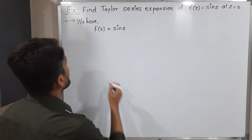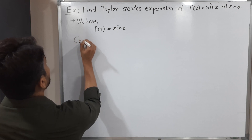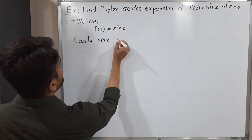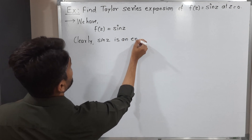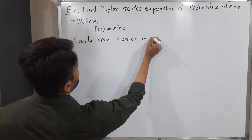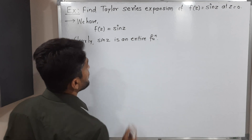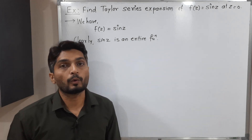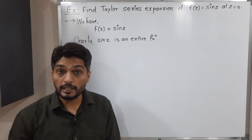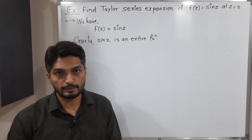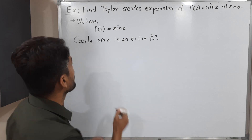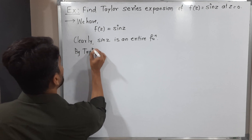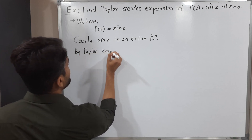So let me mention clearly: sin(z) is an entire function. It is analytic at each and every point of the complex plane. So definitely we can find its Taylor series expansion. So let us find it now by the Taylor series expansion formula.